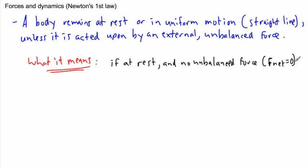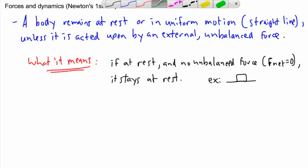So if the resultant or net force is zero, then it stays at rest. An example could be that world's most boring example where we have a piece of wood sitting on a table. It stays at rest. That's the first one: an object remains at rest unless it's acted on by an external unbalanced force.